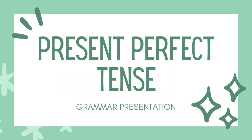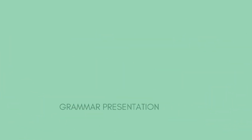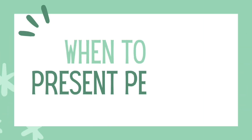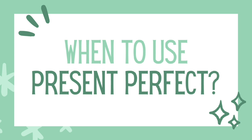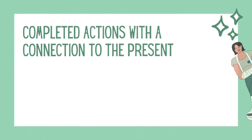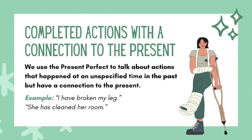In this video, you will learn about present perfect tense. When to use present perfect tense? Number 1: Completed action with a connection to the present. We use the present perfect to talk about actions that happened at an unspecified time in the past but have a connection to the present.